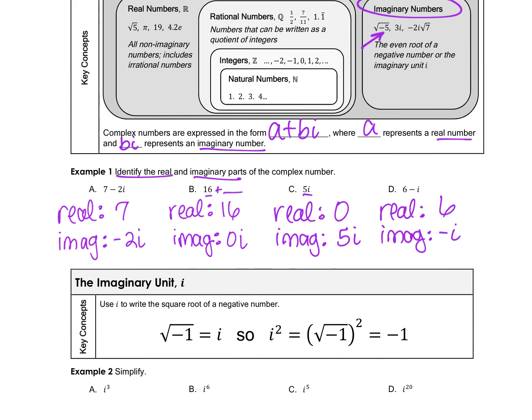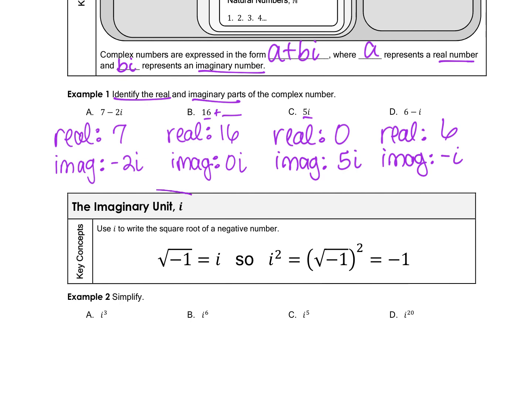Imaginary numbers include the i part. The imaginary unit is defined so that the square root of negative 1 equals i. Any time you have the square root of a negative number, you bring it outside and write i. Something very important to know: i squared always equals negative 1, because taking the square root and multiplying it by itself gets rid of the radical, leaving negative 1.